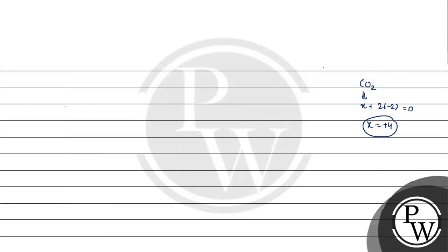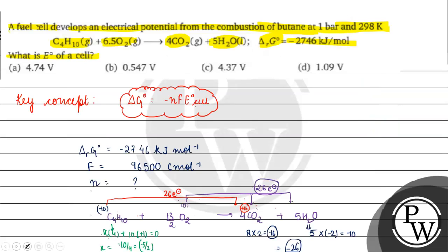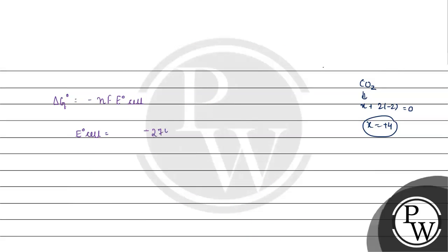Delta G⁰ equals minus nFE⁰ cell. E⁰ cell equals delta G⁰ by minus nF, which equals minus 2746 kilojoules per mole divided by minus 26 times 96,500 coulombs per mole. This equals 1.09 volts.